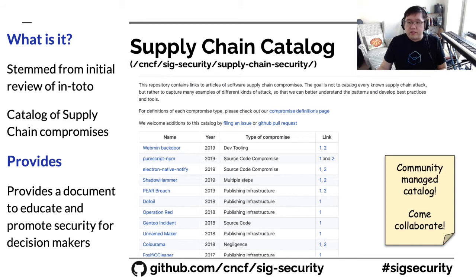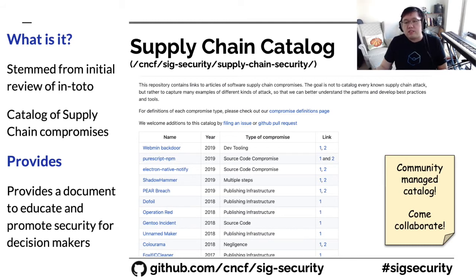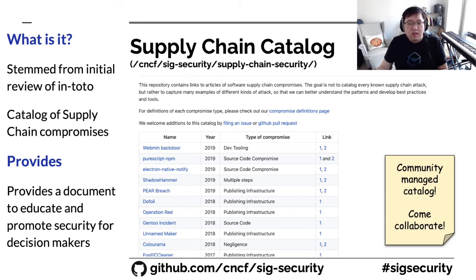An example of a security resource produced and maintained by the group is the supply chain catalog. What the security supply chain catalog really provides is a list of supply chain compromises and descriptions of some of the threats that apply to supply chain management — for example, what typosquatting means, and what signing means in the context of supply chains. The document is meant to provide both a means of education, but also serve to help security practitioners convince management and decision makers on the importance of supply chain attacks. This is community managed, so if you see a new supply chain compromise or would like to add more information about threats and mitigations, please come by and create a PR.